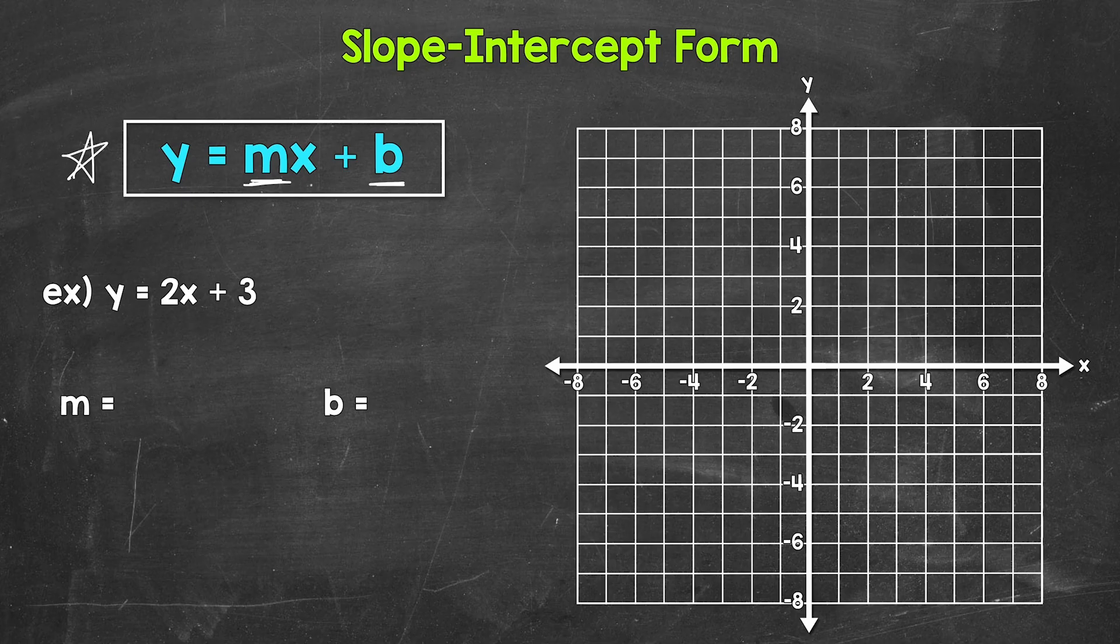Let's jump into our example where we have y equals 2x plus 3. So we need to graph this line. Our slope is 2. And then our y-intercept is 3.